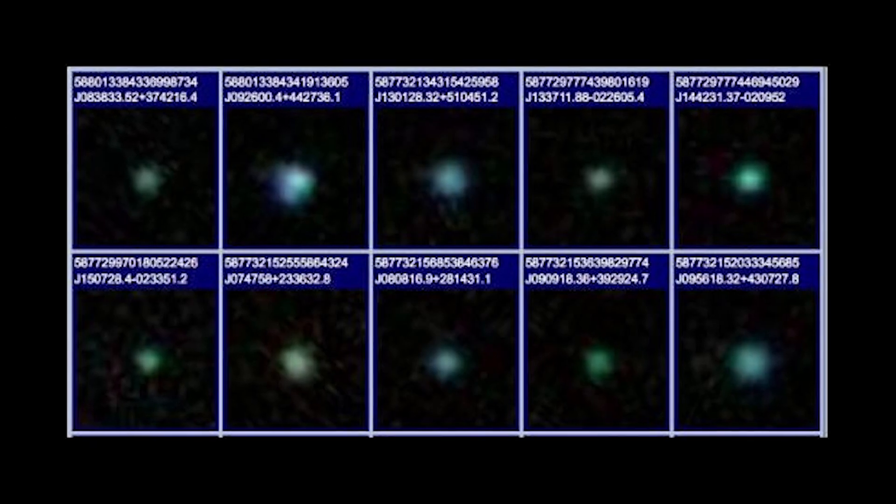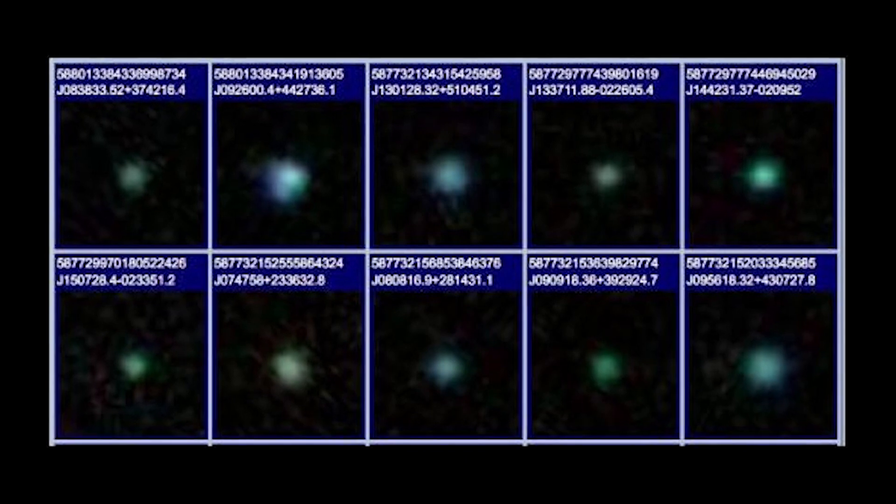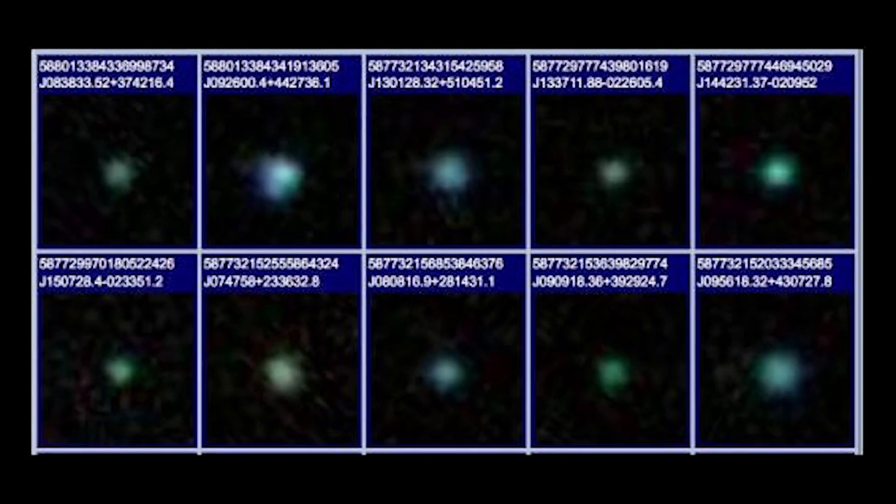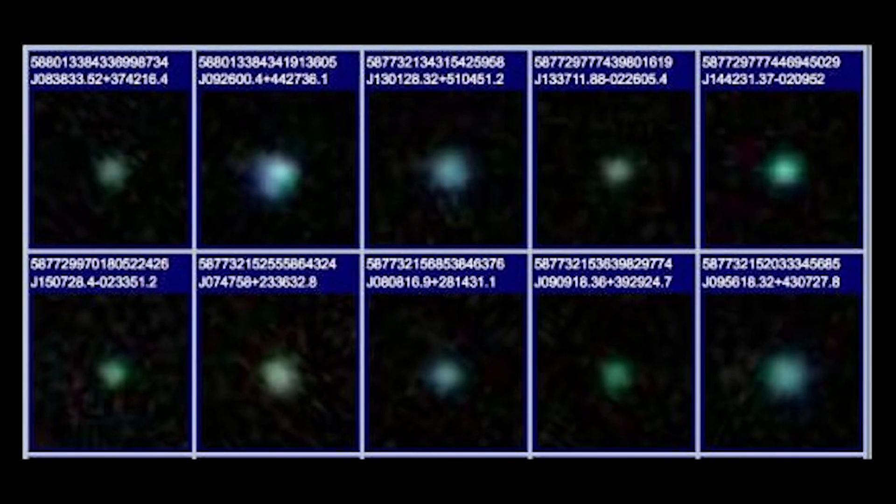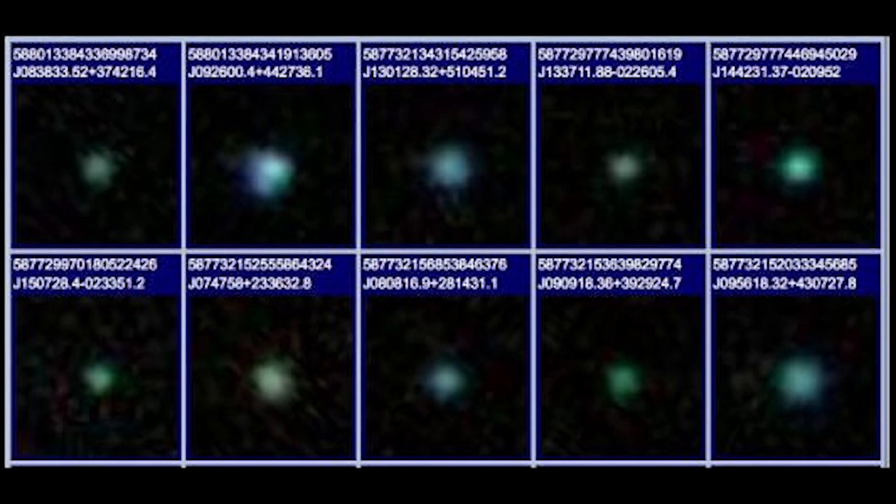Green pea galaxies were first discovered in 2009 by volunteers participating in the Galaxy Zoo project, where citizen scientists classify galaxies in images. These galaxies are small, round, unresolved dots with a distinctively green shade.